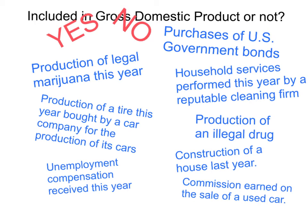Hello, it's John Bauman. This little video will give you eight examples of economic activities, and we're going to take a look at which one of these eight are included in gross domestic product, and which ones are not. So take a look at all eight of them — they're all in blue. You can pause the video and see if you can determine yes or no if they're included in GDP or not.